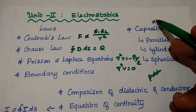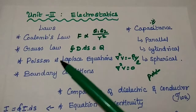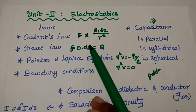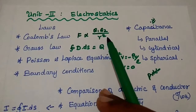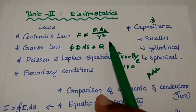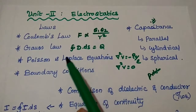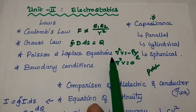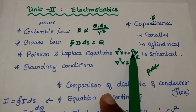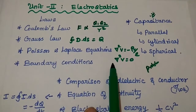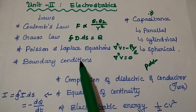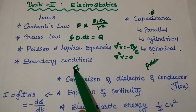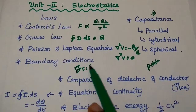We should concentrate more on the capacitance part. As an overview: Coulomb's law states that the force between two charges is directly proportional to the product of the charges and inversely proportional to the square of the distance. Gauss's law is the integration of D dot dS equal to Q. The Poisson equation is del-squared V equal to minus rho_v over epsilon, and the Laplace equation is del-squared V equal to zero. There are two important boundary conditions: one is E_t1 equal to E_t2.